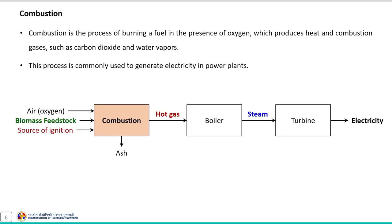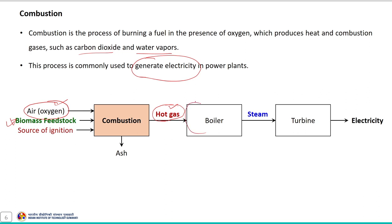Combustion is the process of burning a fuel — whether bio-based feedstock, fossil fuel or other organic material — in the presence of oxygen, producing heat and combustion gases such as carbon dioxide and water vapour. This process is commonly used to produce heat for electricity generation in power plants, where hot gases from combustion are sent to a boiler for steam generation, and the produced steam drives a turbine to generate electricity.